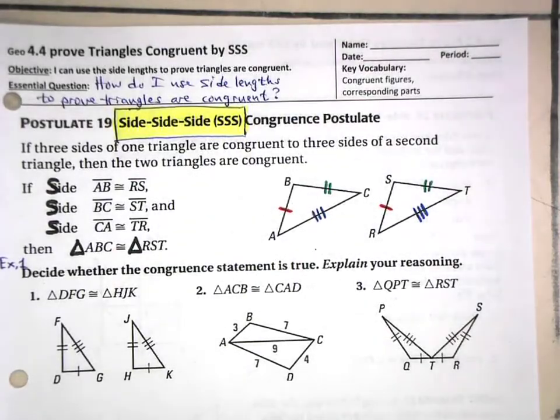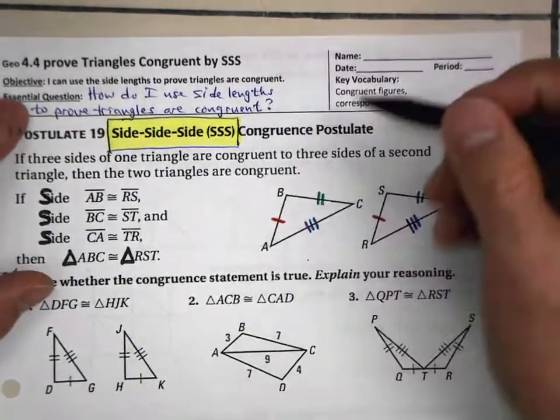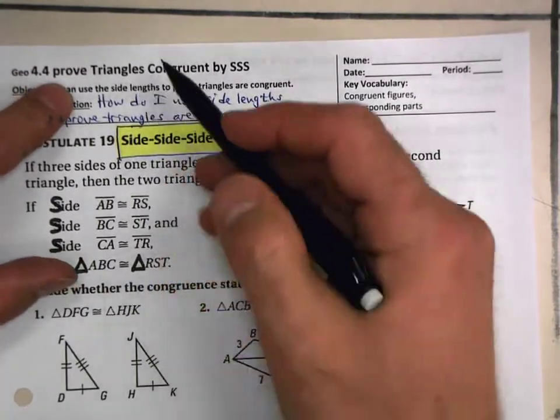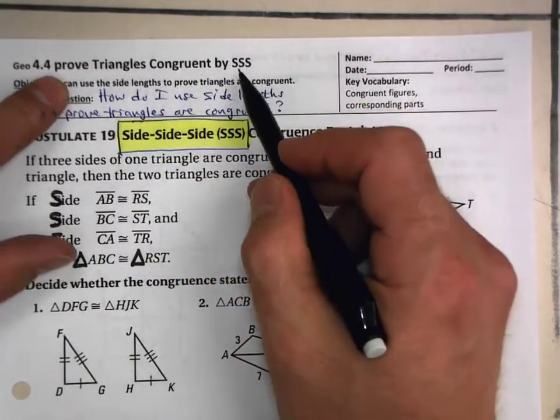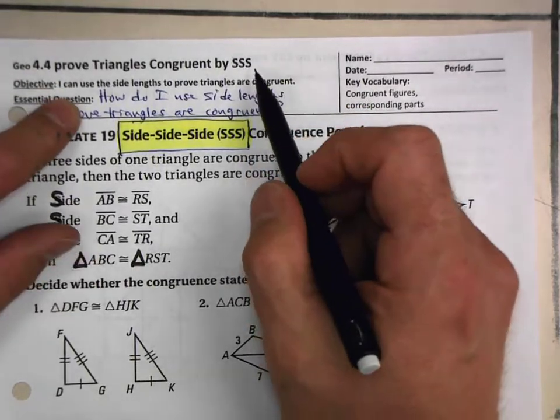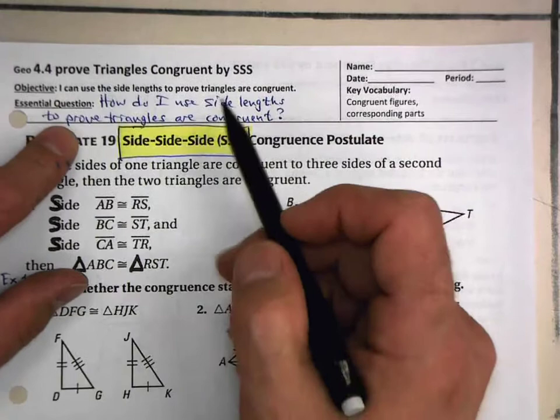Are you ready? Let's do 4.4. We want to prove that triangles are congruent by SSS. What does that mean? Is that like some German secret service? No. I'll tell you what it is in just a minute.